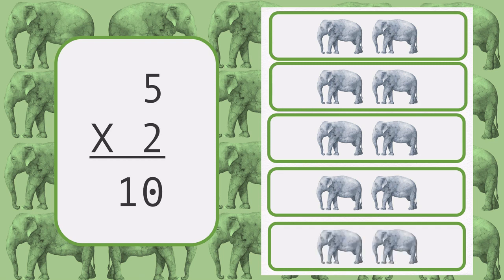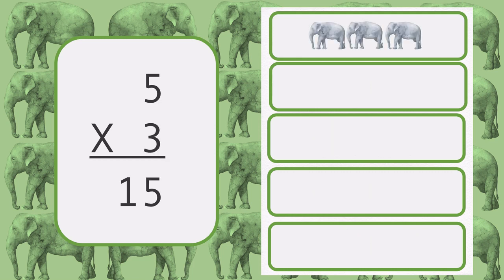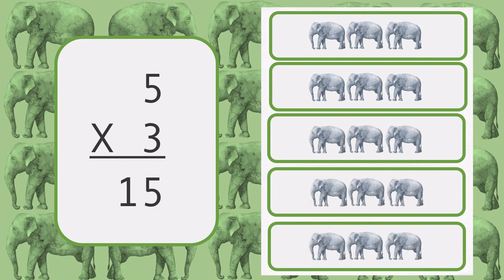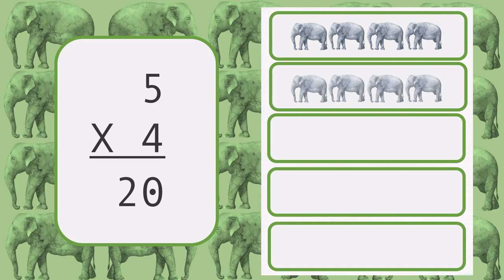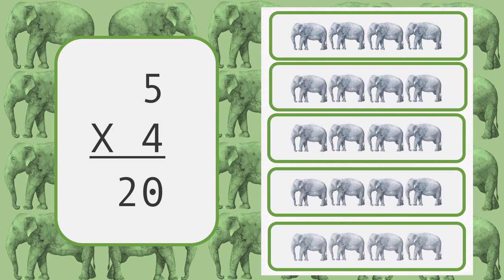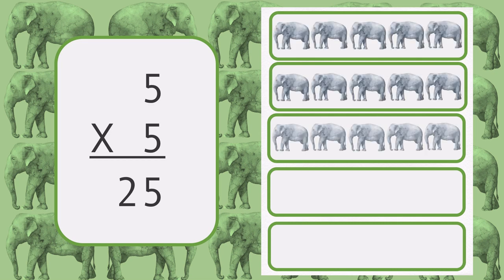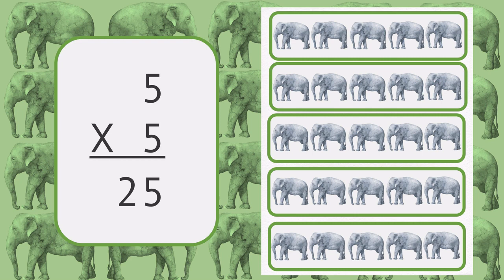There are 5 groups of 2. 5 times 2 is equal to 10. There are 5 groups of 3. 5 times 3 is equal to 15. There are 5 groups of 4. 5 times 4 is equal to 20. There are 5 groups of 5. 5 times 5 is equal to 25.